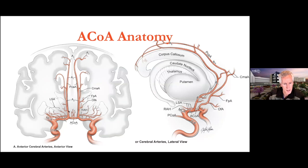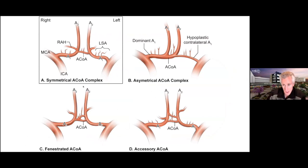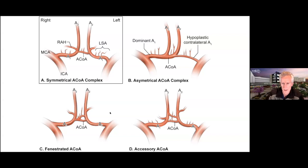We also can't forget about the perforators on the ACoM itself. The classic symmetrical ACoM complex shows all the named arteries. With aneurysms, you'll very frequently see the asymmetrical ACoM complex with a dominant A1 and a hypoplastic one on the opposite side. You'll also see anatomical variations like fenestrations and the accessory ACoM — these are things to look for so they don't confuse you during dissection.